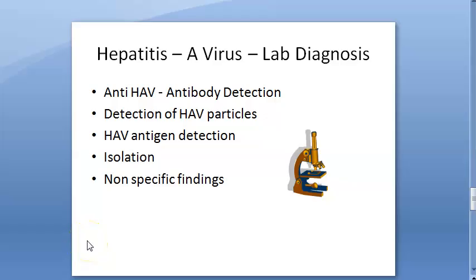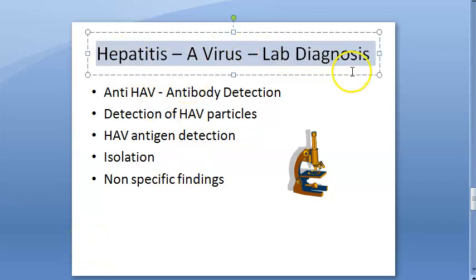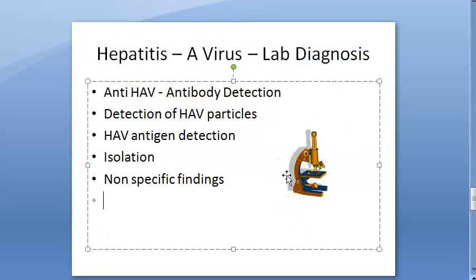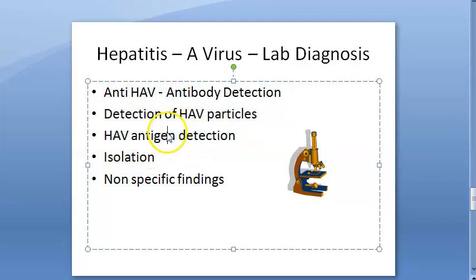In this video, let us look at the hepatitis A virus lab diagnosis. First we'll finish off hepatitis A virus lab diagnosis, then we will move to hepatitis B. Here you're going to do antibody detection, then antigen detection, then virus isolation. Let us look at antibody detection — you will detect antibodies against the HAV, that is the hepatitis A virus.